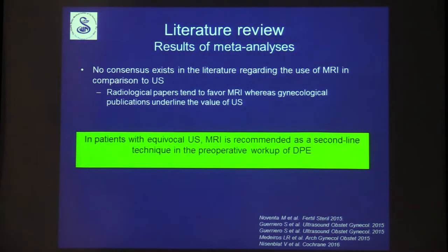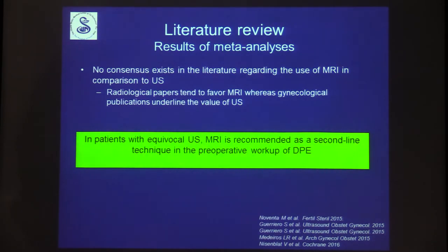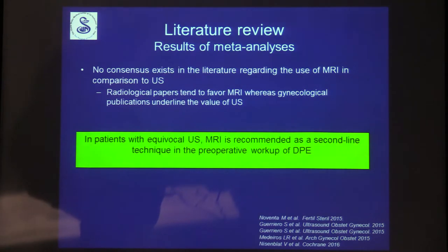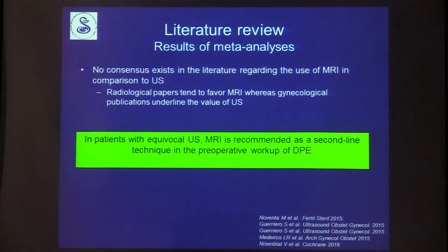A review of four meta-analyses published in the last two years on endometriosis and imaging shows no consensus regarding the use of MRI. Radiological papers favor MRI while gynecological publications favor ultrasound, but all agree that an equivocal ultrasound should be followed by MRI as a second-line technique, especially in surgical workup.